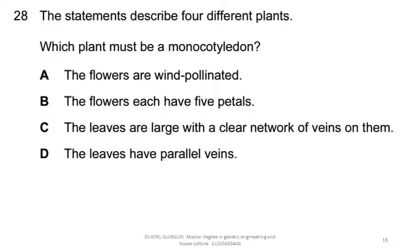The statements describe 4 different plants. Which plant must be a monocotyledon? A) The flowers are wind pollinated. B) The flowers each have 5 petals. C) The leaves are large with a clear network of veins. D) The leaves have parallel veins. The answer is D, where monocots have leaves with parallel veins.